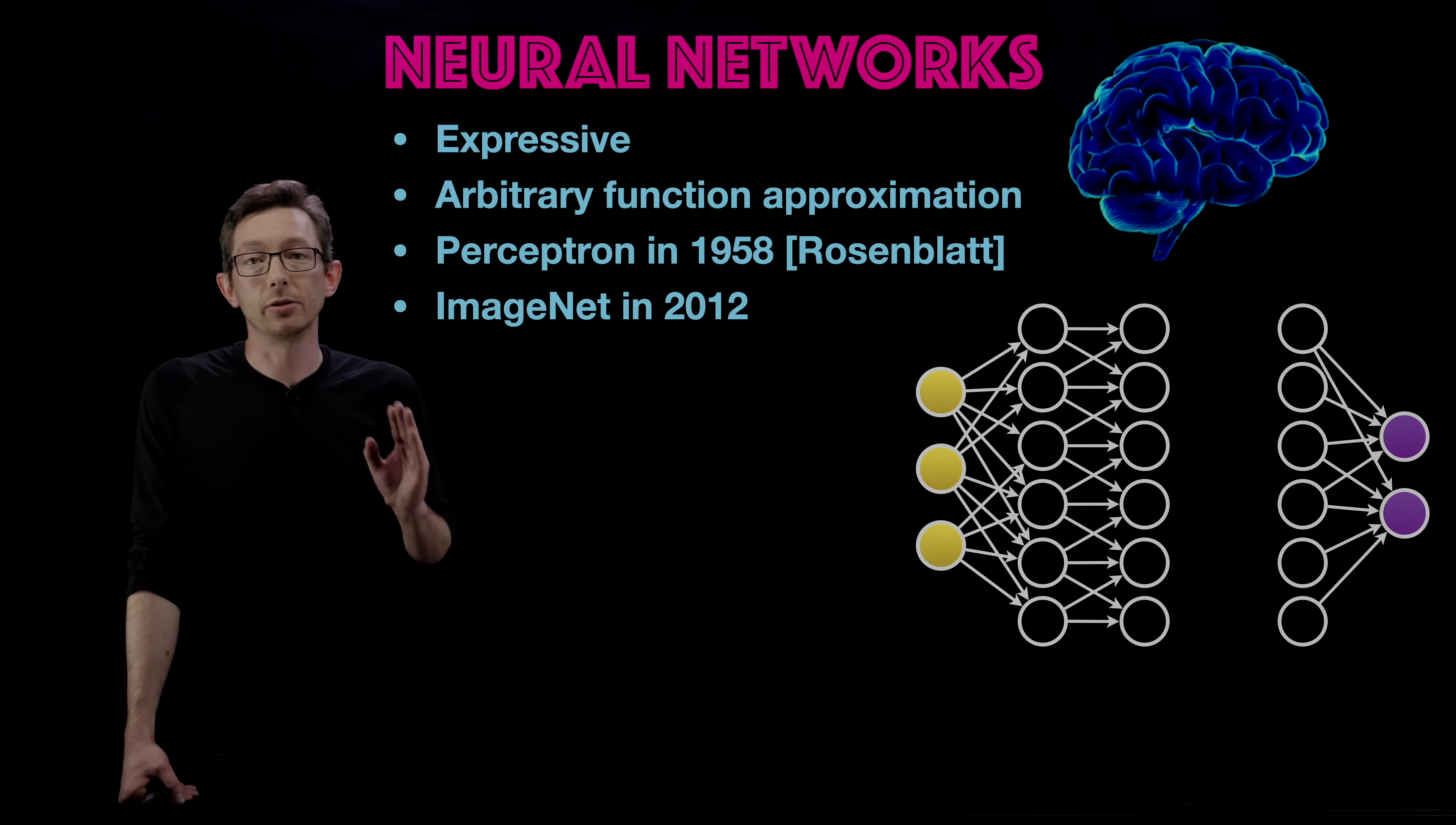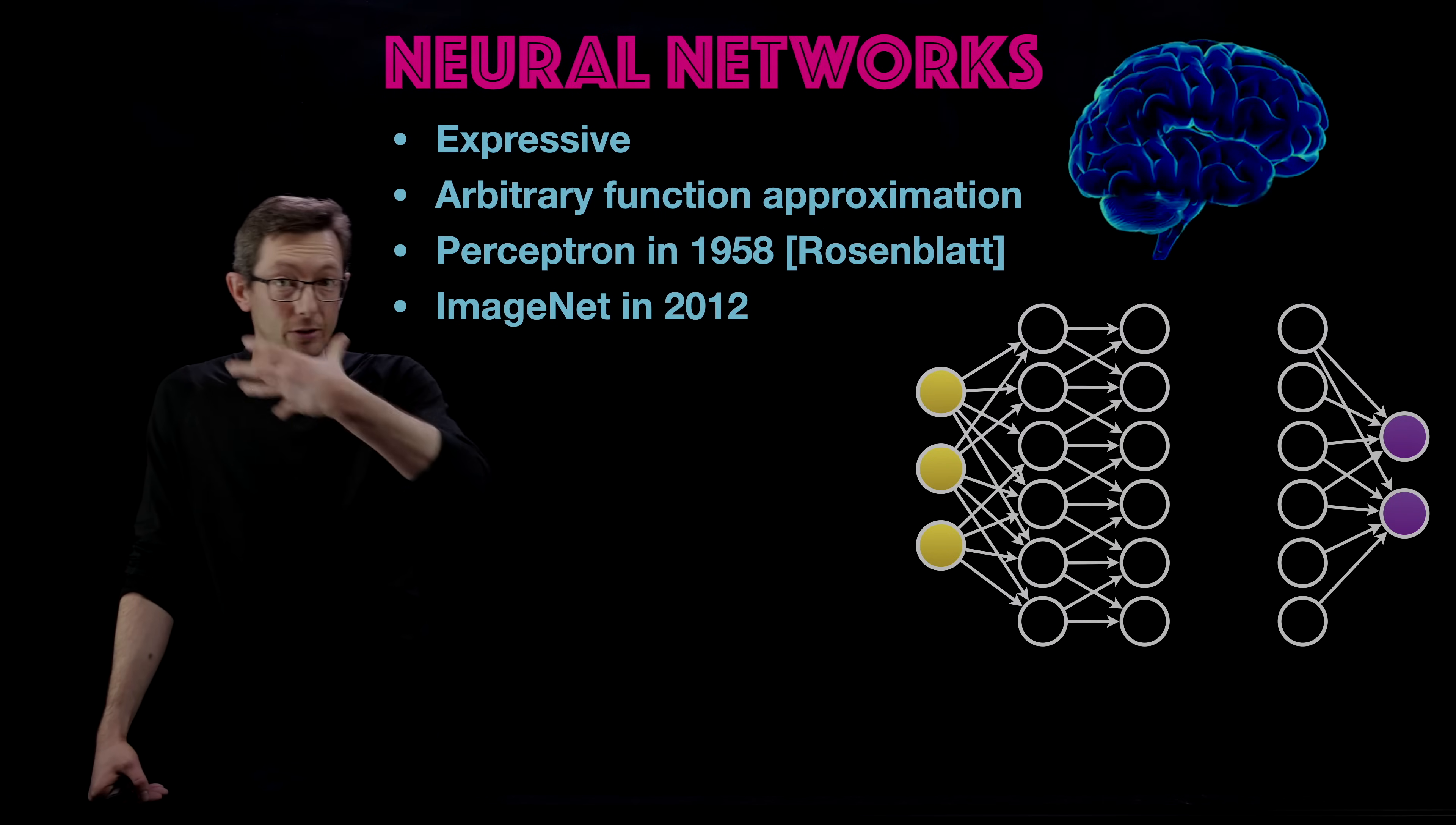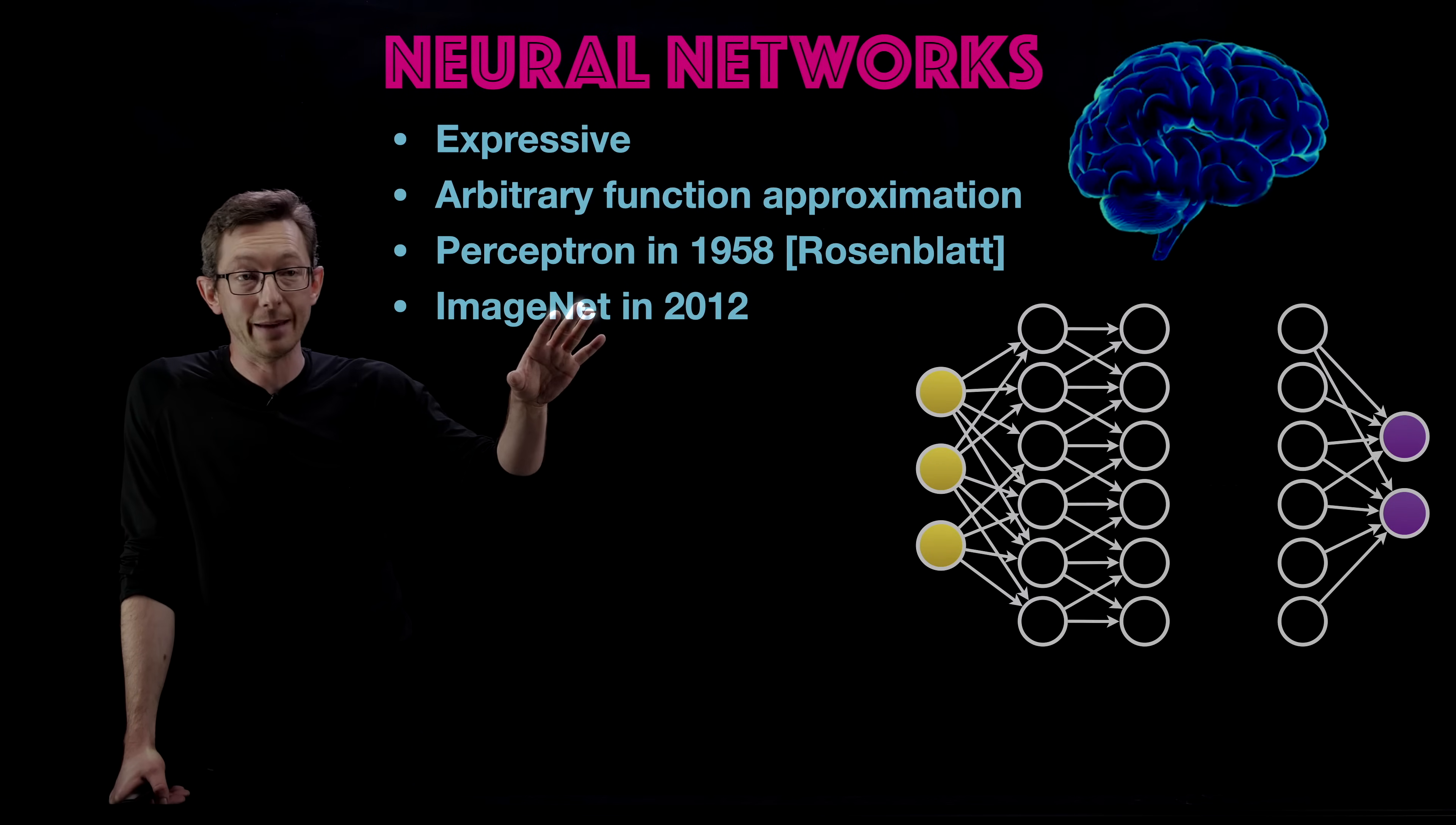One of the reasons that they're so useful is because they have this arbitrary function approximation property, which means with a sufficiently deep neural network, you can essentially approximate any function if you have enough training data and a large enough network. That's really useful. So they're very, very expressive. They can capture multi scale features like for facial recognition or image recognition. They can play on large and small features and they're very, very expressive. They've been around for a long time since the perceptron in 1958 by Rosenblatt. But they really took off recently in the last 10 years or so with the ImageNet in 2012.